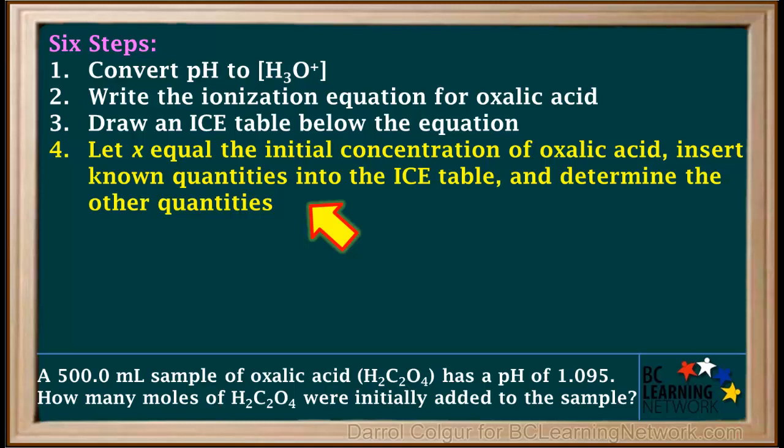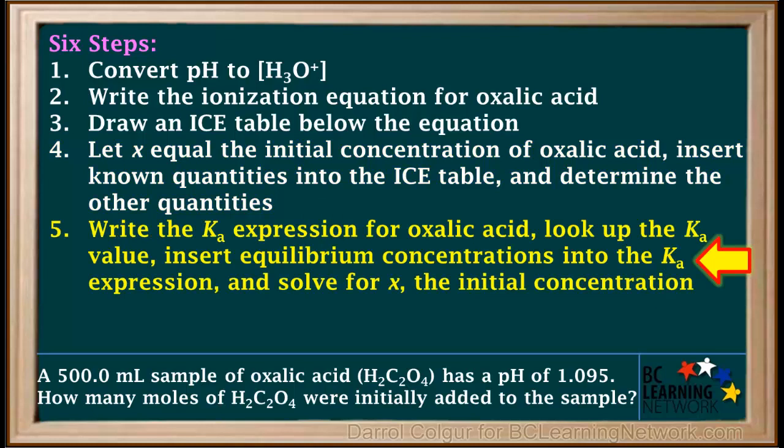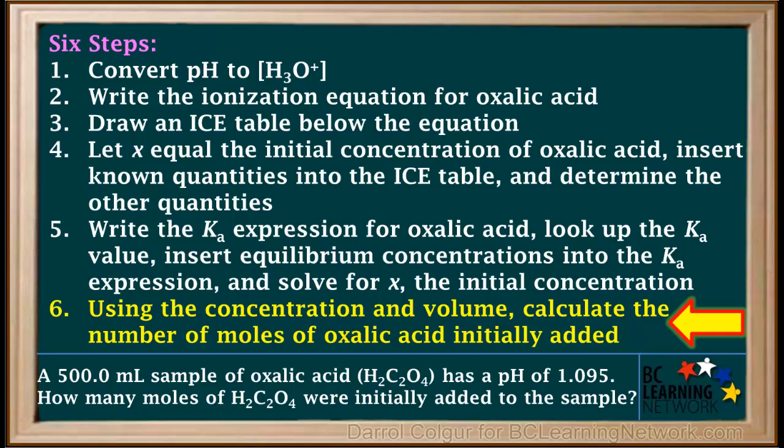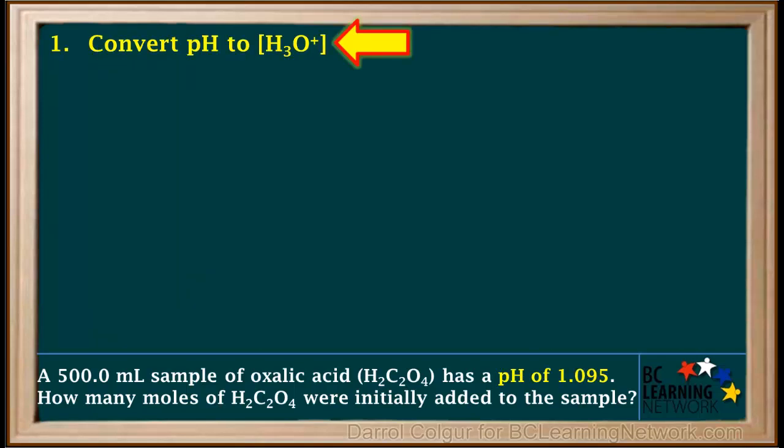We insert known quantities into the ICE table and determine all other quantities. We write the Ka expression for oxalic acid, look up the Ka value, insert equilibrium concentrations into the expression, and solve for X, the initial concentration. In the last step, we'll use the concentration and volume of the sample to calculate the number of moles of oxalic acid initially added to the sample.